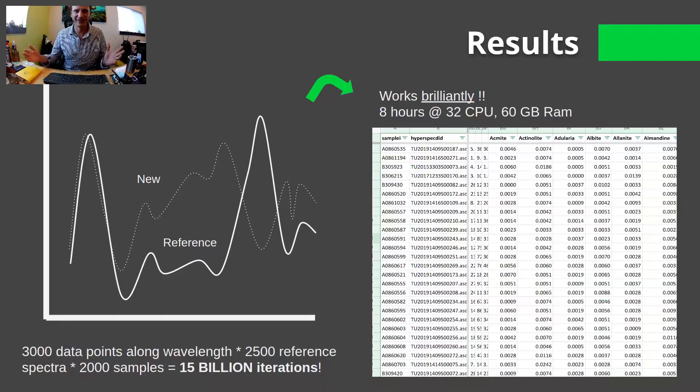The results? Brilliant. Of the 3,000 data points for each new sample, so along the wavelength, and times the 2,500 reference spectra that they were investigated with, and then 2,000 samples, that meant that our computer went through 15 billion iterations to bring the answers back in just a few hours. Again, leveraging the power of the cloud. You can't run this on your laptop. So, 8 hours, 32 CPUs, 60 gigs of RAM, and there we go. These are our results. For every given sample, we were able to use KNN to go through and classify any one of the 1,500 minerals and the percentages of that mineral in that sample.